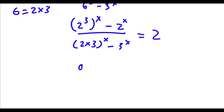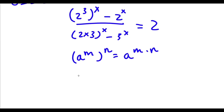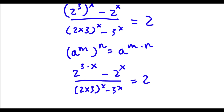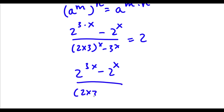Now if I have something in the form a to the power of m to the power of n, this is equal to a to the power of m times n. So 2 to the power of 3 to the power of x is going to equal 2 to the power of 3 times x. I have this minus 2 to the power of x over 2 times 3 to the power of x minus 3 to the power of x. Now 3 times x is 3x, so I have 2 to the power of 3x minus 2 to the power of x over 2 times 3 to the power of x minus 3 to the power of x, is equal to 2.